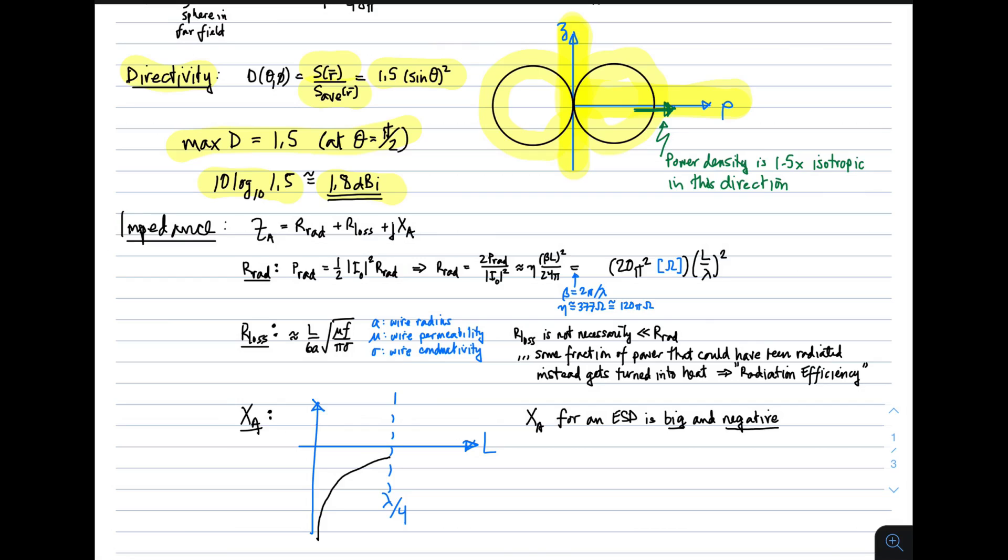So, that's it. An electrically short dipole is just a little bit more directive than an isotropic antenna, except, of course, we have these nulls along the axis of the dipole.